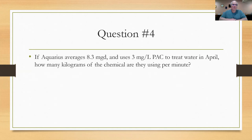Question number four is a little bit easy, but it does have a little kink to it. The Aquarius plant averages 8.3 MGD and uses 3 milligrams per liter powder-activated carbon to treat the water in April. How many kilograms of the chemical are they using per minute? So this is the basic dosage problem. You can work the pounds per day formula, but then you're going to take that pounds per day and convert it to kilograms per minute.